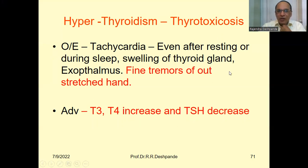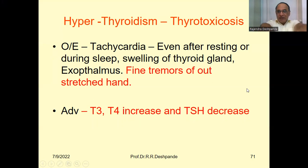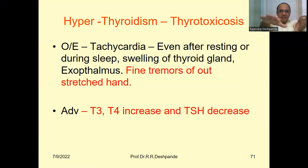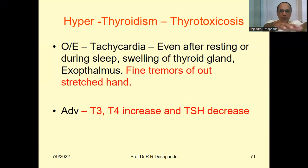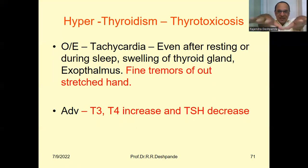There is also swelling of the thyroid gland and exophthalmos — I have shown you the picture. Then there are fine tremors. You can see my hand is shaking — these are fine tremors. If you put some paper over the outstretched hand, the paper will move. These are called fine tremors of the outstretched hand.